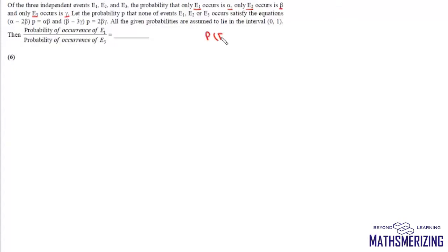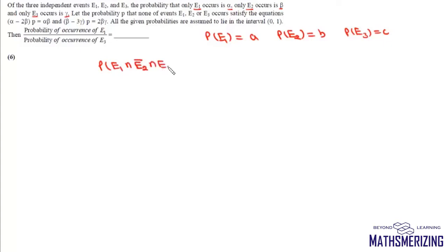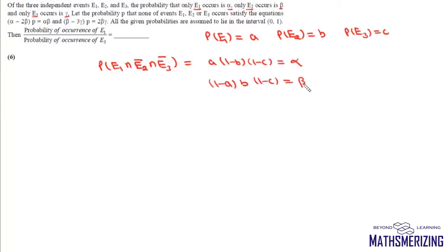Say probability of occurrence of e1 is a, probability of e2 is b, and probability of e3 is c. Now only e1 occurs means e1 intersection e2-complement intersection e3-complement. Since they are independent events, this probability is a into (1 minus b) into (1 minus c), which equals alpha. Similarly, (1 minus a) into b into (1 minus c) equals beta, and (1 minus a) into (1 minus b) into c equals gamma.